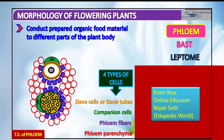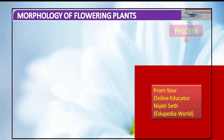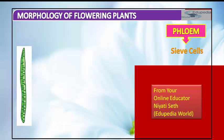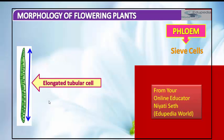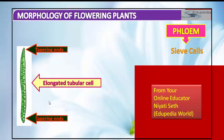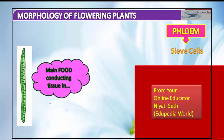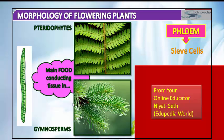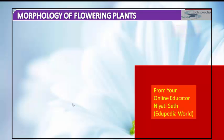So this is the cross-section of phloem where we have seen the four types of cells: sieve cells, sieve tubes, companion cells, phloem fibers, and phloem parenchyma. Now, looking at the diagrammatic representation, sieve cells are elongated tubular cells with tapering ends, and they are the main food-conducting tissue in pteridophytes and gymnosperms.